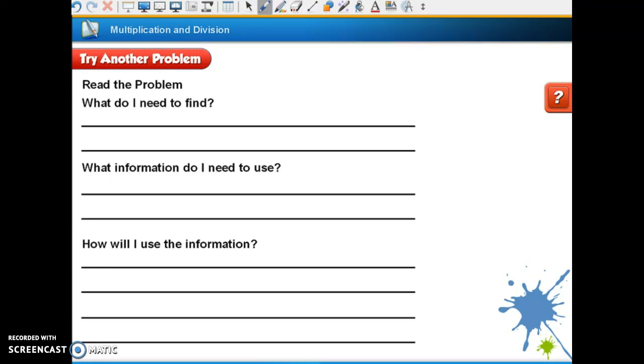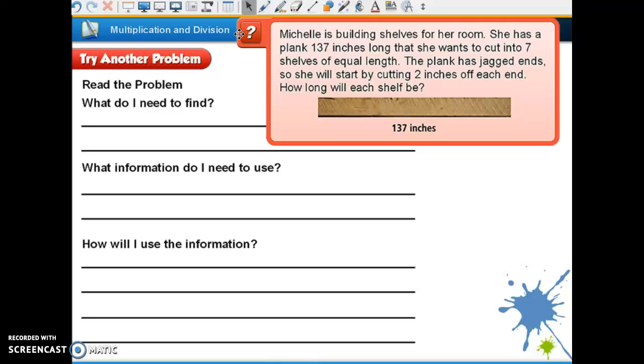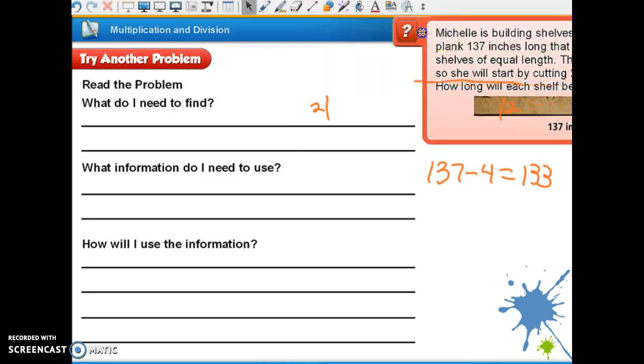Okay, here is another problem. Michelle is building shelves for her room. She has a plank that's 137 inches long that she wants to cut into seven shelves of equal length. The plank has jagged ends, so she will start by cutting two inches off each end. How long will each shelf be? So if she cuts two inches off each end, two off of here and two off of here. So 137 minus 4 equals 133. So that's how long her board is going to be.